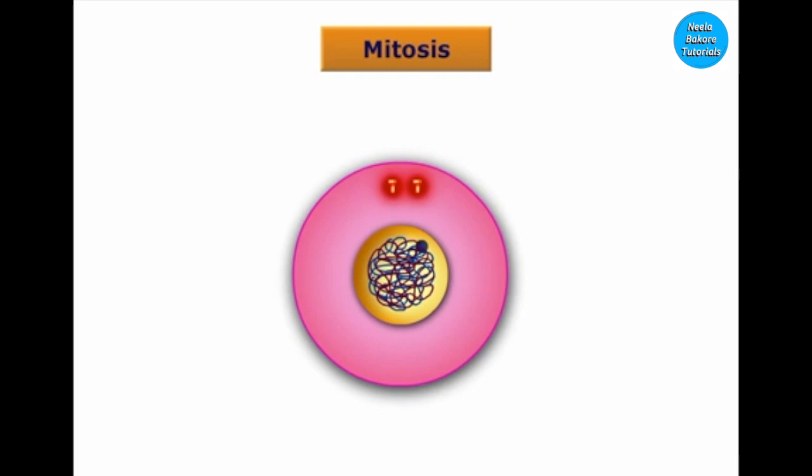Mitosis is a method of cell division. Before the cell divides, it goes through interphase, which is the preparatory phase comprising of G1, S, and G2 phases. During G1 and G2 phases, that is gap 1 and gap 2 phases, growth takes place.